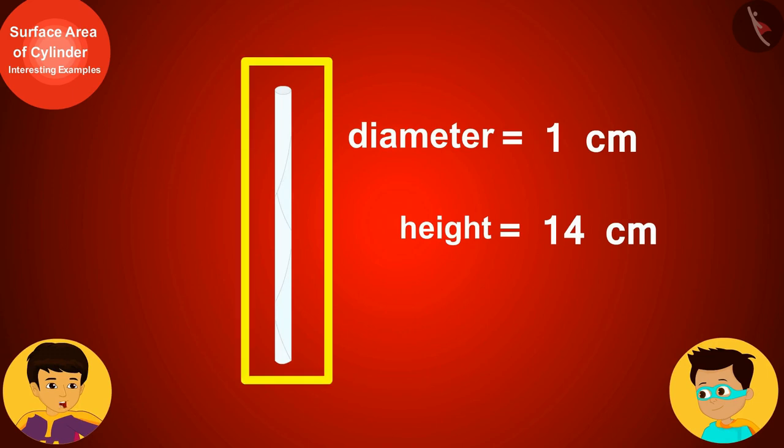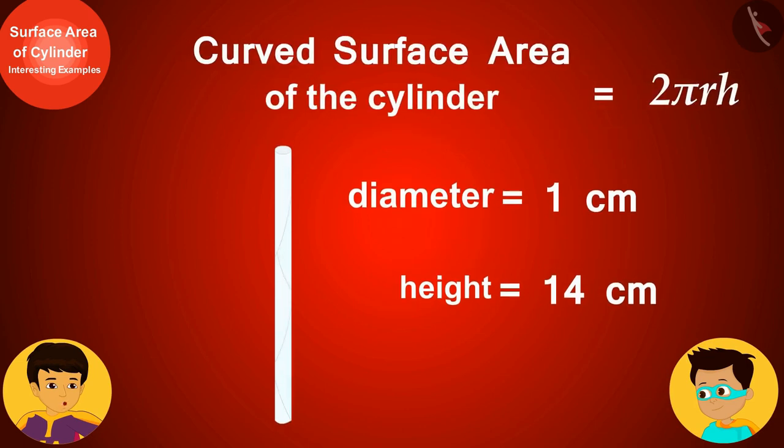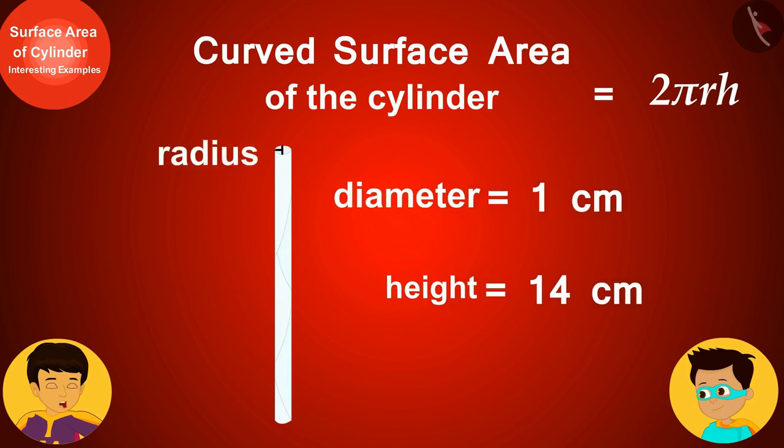The straw is cylindrical in shape whose diameter is one centimeter and height is 14 centimeters. And as we write in a math formula book, the curved surface area of the cylinder is equal to 2πrh, where r and h are the radius and height of the cylinder respectively.